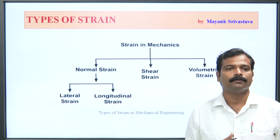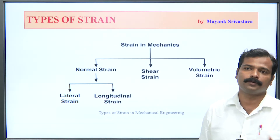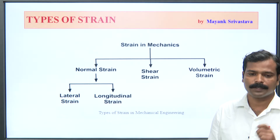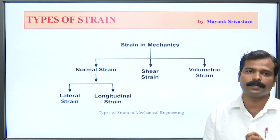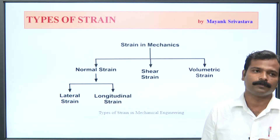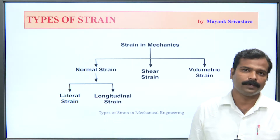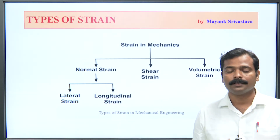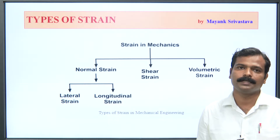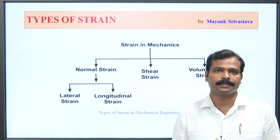Normal strain is basically of two parts: lateral and longitudinal. If a material is elongated, the width decreases — that is lateral strain. And if you talk about longitudinal, if the length increases, you can say it is an increase in longitudinal strain or deformation.